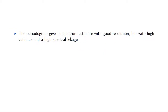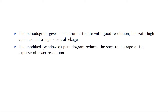We have seen that the periodogram gives us a spectrum estimate with high variance and high spectral leakage, but otherwise with good resolution. We've seen that we can use a modified or windowed periodogram in order to reduce the spectral leakage at the expense of some resolution. However, none of these methods address the variance of the estimate, so this is what we'll look at now.